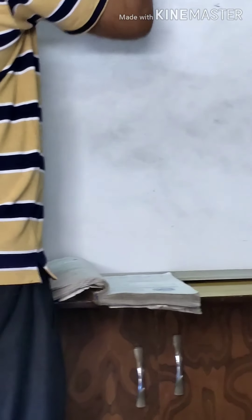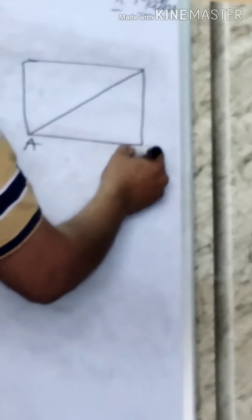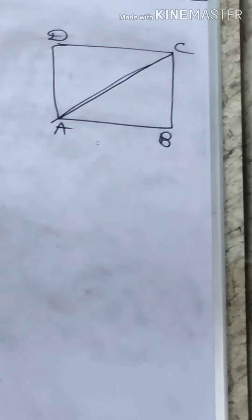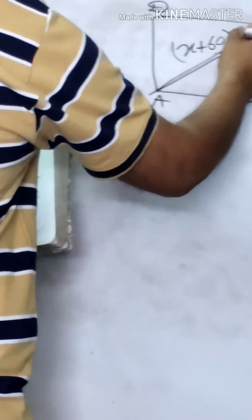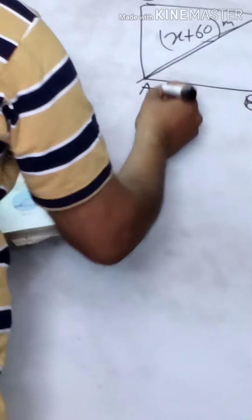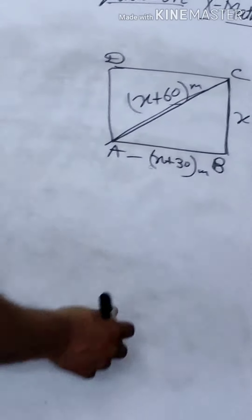What is question number 6? I am just introducing it; next time I will ask for the solution. The diagonal of a rectangular field is 60 meters more than the shorter side. The longer side is 30 meters more than the shorter side. Find the sides of the field. Let the shorter side = x meters, so diagonal = x + 60 and longer side = x + 30 meters.